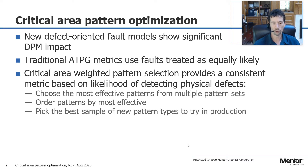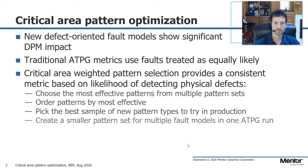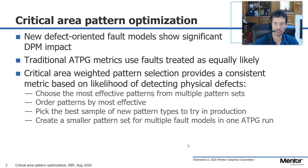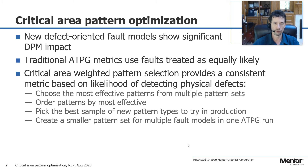If you have a new fault model you want to try in production, here's a way you can pick a small sample that are likely the most effective. You can take multiple fault models and multiple patterns and sort them. Additionally, you can define multiple fault models and create a new pattern set from scratch in one ATPG run — instead of doing a stuck-at run, grading it for bridge, doing a top-up run for bridge, and so forth, you can define all these fault models together and create one run.